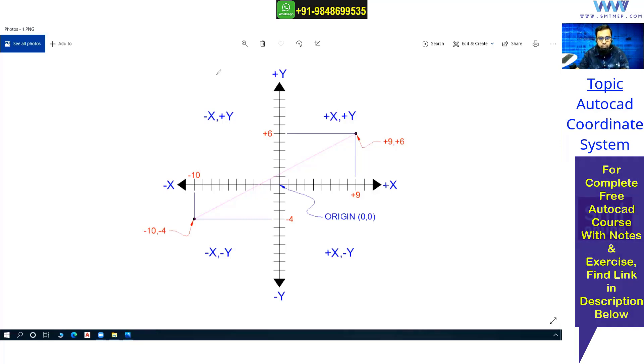This is the first quadrant, right? This is the second quadrant, this is the third, and fourth. Four quadrants. For example, if I pick this point, what will be the coordinate for this point?